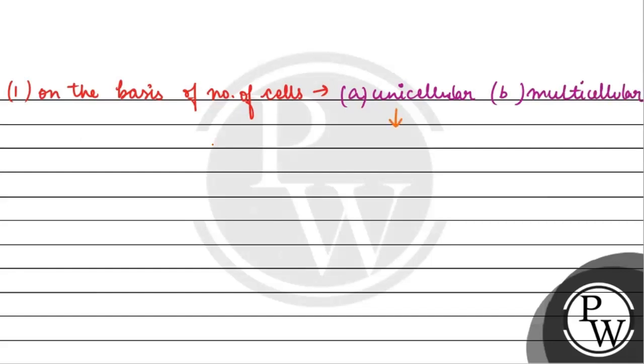Now let's look at their examples. The unicellular example is goblet cells, and the multicellular example is salivary glands.